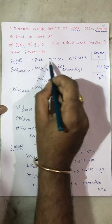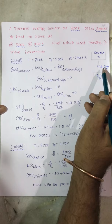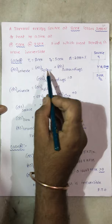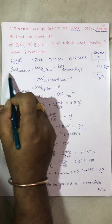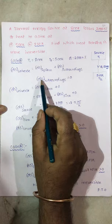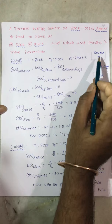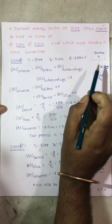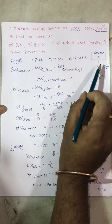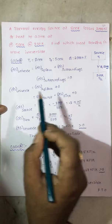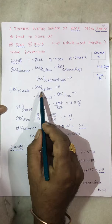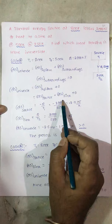Let us consider Case A, where sink temperature is 500K. Q is given as 2000 kJ, transferring from T1 to T2. The change in entropy of the universe equals DS of system plus DS of surroundings. DS of surroundings is zero because heat is transferring within the system itself — from source to sink — not from the system to the surroundings. So DS of universe equals DS of source plus DS of sink.